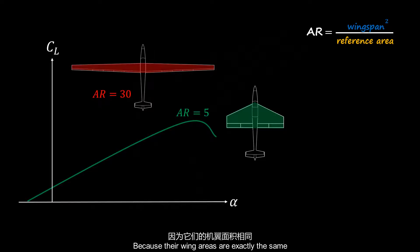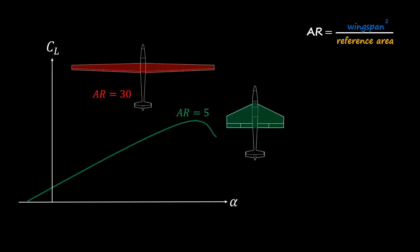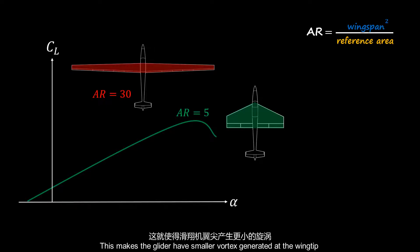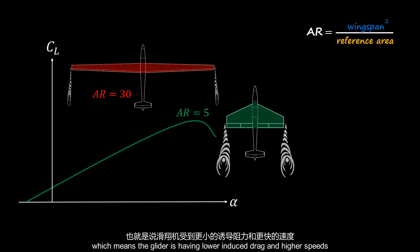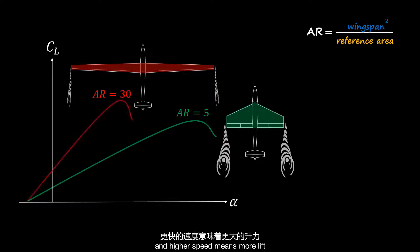Because their wing areas are exactly the same, the glider has a longer wingspan and shorter chord length than the other plane. This makes the glider have smaller vortices generated at the wing tip, which means the glider has lower induced drag and higher speed. And higher speed means more lift.